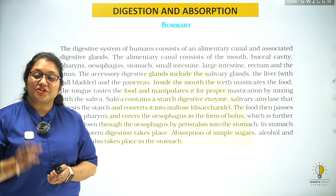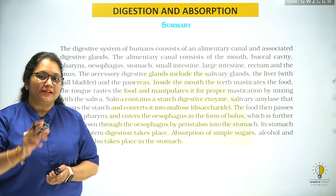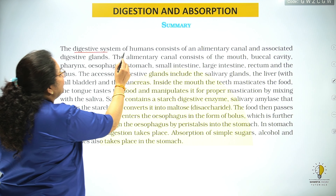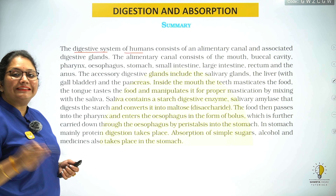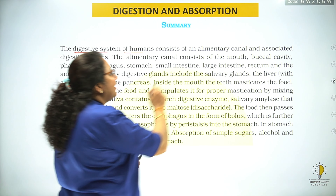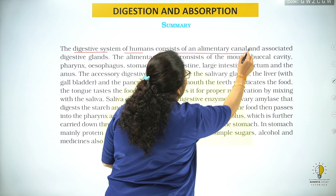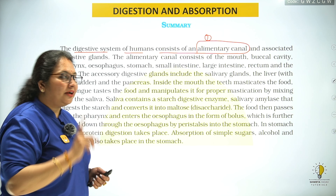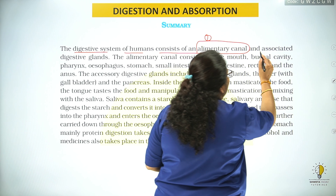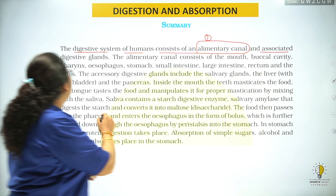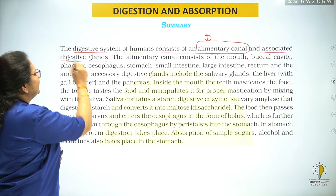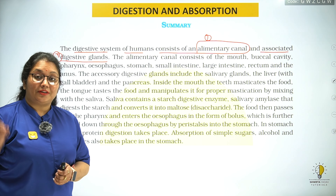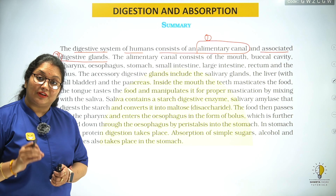Digestion and Absorption Chapter ki summary. The digestive system of humans consists of two main parts: the alimentary canal and associated digestive glands. Human alimentary canal mein dho cheezein hain - associated digestive glands and the elementary canal.